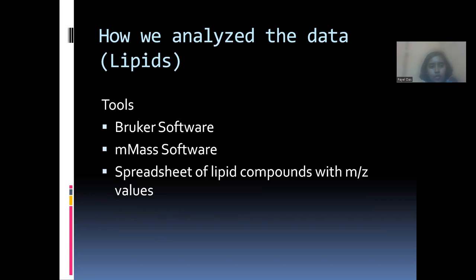Now we'll go over how we analyzed the results. Dr. Angelica collected some samples from those sites in Iceland, and then we analyzed what type of organic matter we would find there — like DNA, lipids, proteins, etc. I was assigned to analyze the lipid data. The tools that we used are Booker software, M-MAS software, and we also manually created a spreadsheet of lipid compounds according to their m/z evidence.